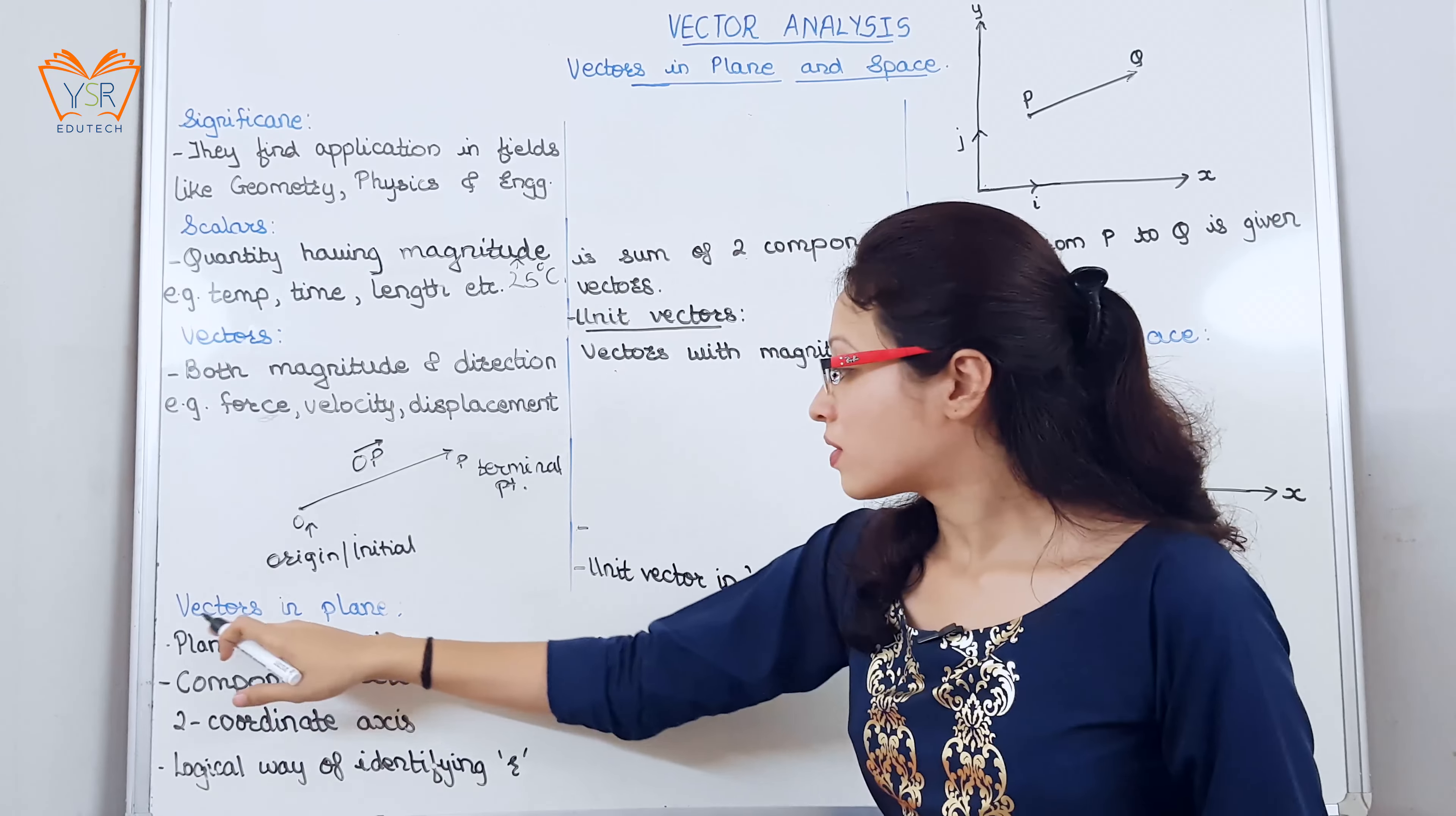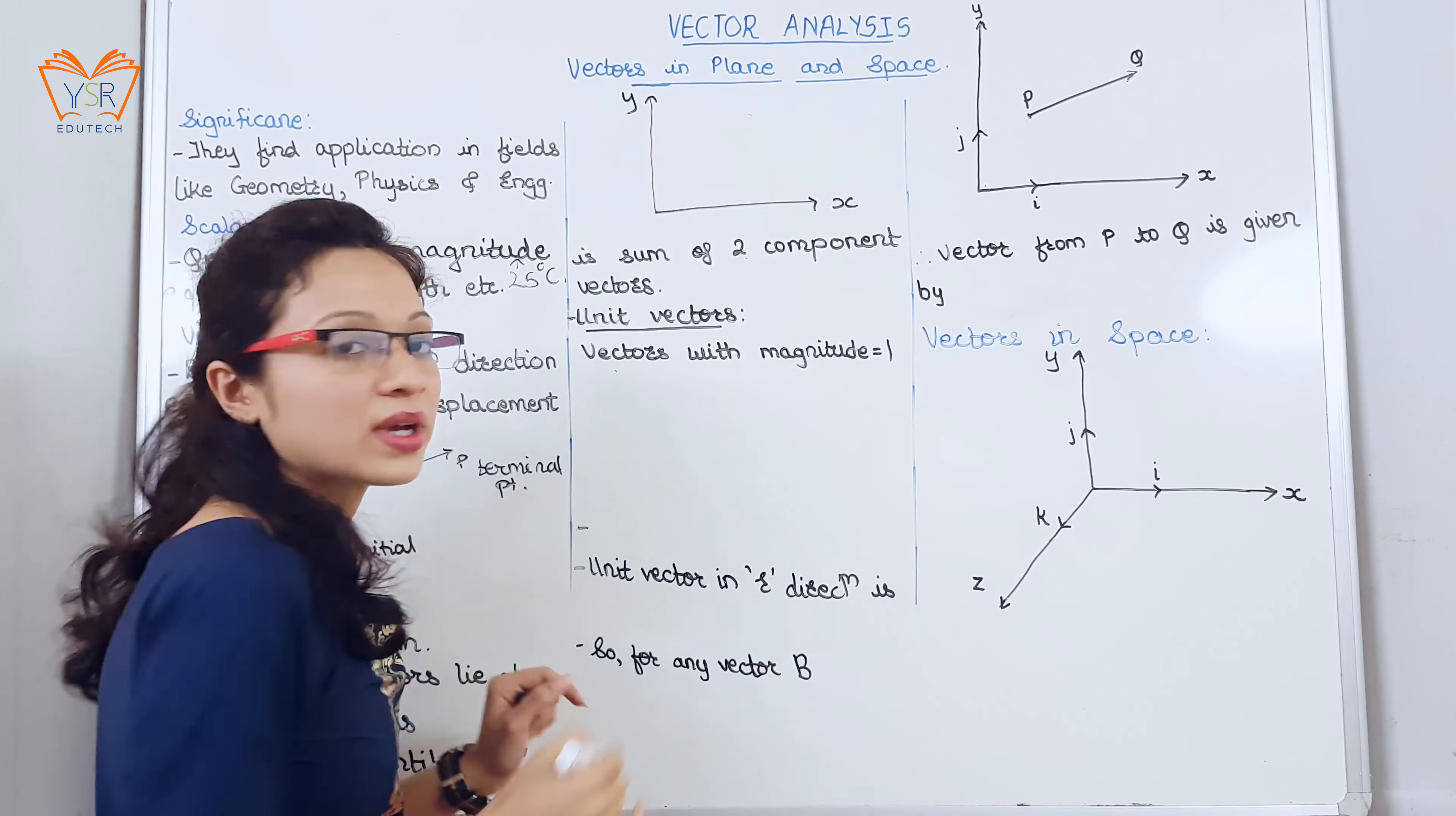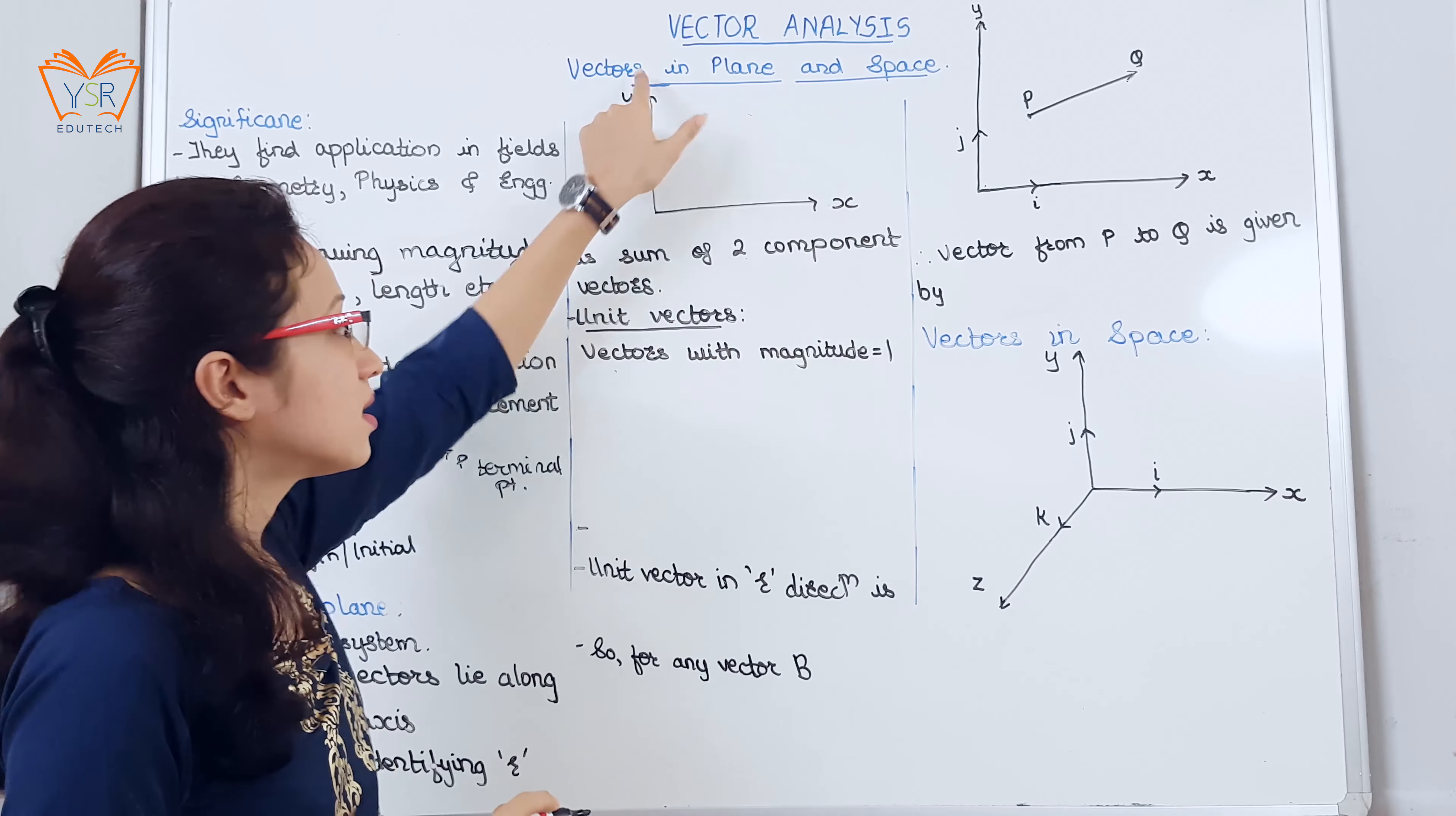Let us move forward vectors in plane. Plane is a 2D system. We will indicate it by the two axis x and y. Now let us consider the component vectors lying along the two coordinate axis x and y.